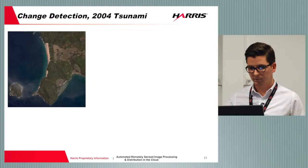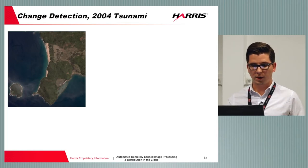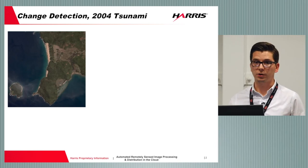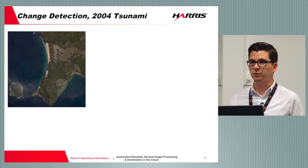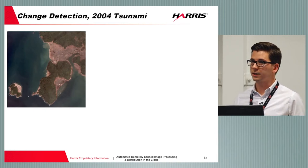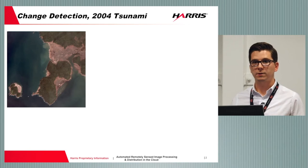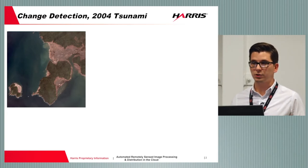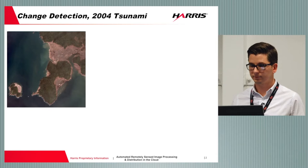One common example is change detection. Here we have an image taken from Western Sumatra in Indonesia. The first image was taken in spring 2004 and then we have a second image of that same area taken in January 2005 - just a matter of weeks after the tsunami which affected that area. I want to do change detection on these two images and find out how much vegetation has been removed by the tsunami.